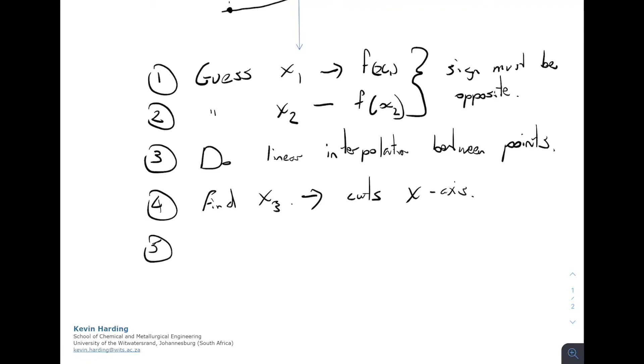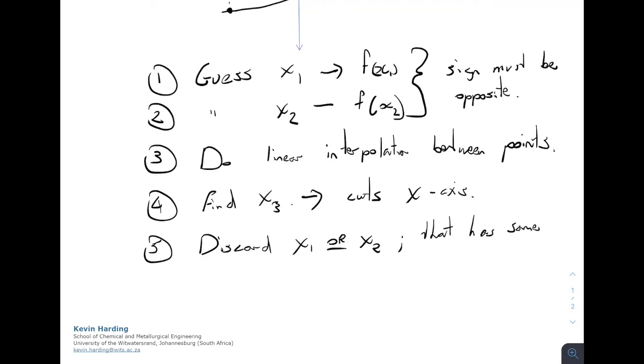The next step is to discard one of our original values. So we want to discard the value either x1 or x2 that has the same sign as x3. So it's the same y sign, not the x sign, not the value of x, the value of the y. So if it has the same y value, then you discard either x1 or x2.